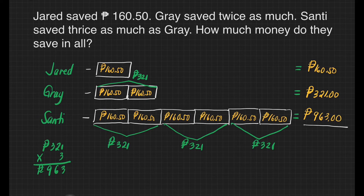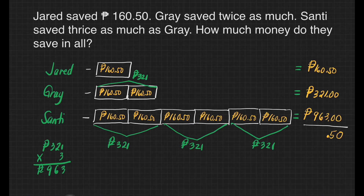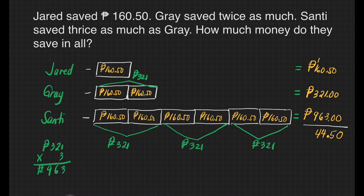Now we are ready to add the money they all saved. Zero plus zero plus zero is zero. Five plus zero plus zero is five. Copy the decimal point. Zero plus one plus three is four. Six plus two plus six is fourteen — carry one. One plus one plus three plus nine is fourteen. Our final answer is 1,444 pesos and 50 centavos.